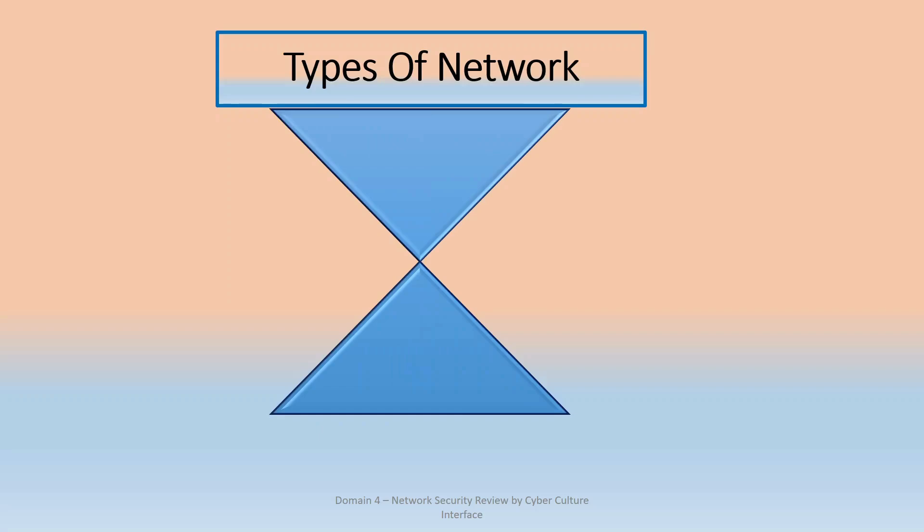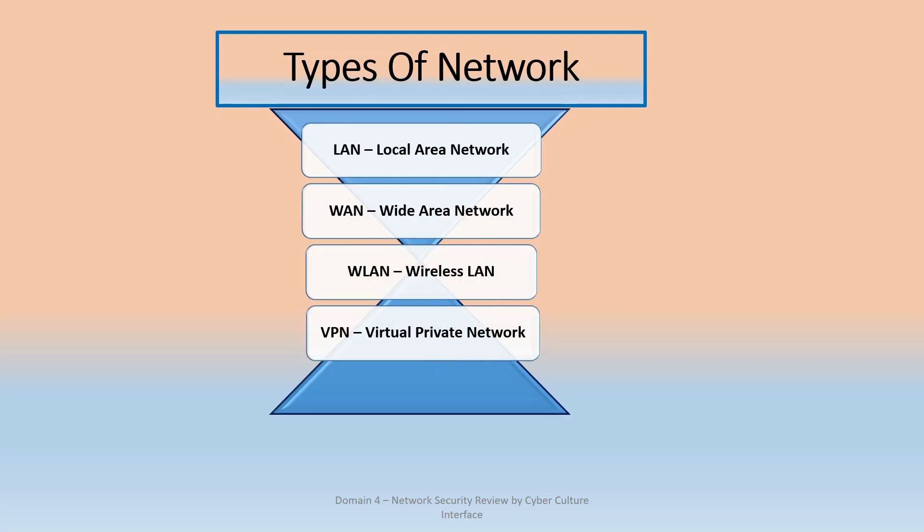We have different types of networks. This is one of the things that you need to understand in cybersecurity in Domain 4 network security. We have four major types: LAN which is local area network, the wide area network (WAN), the WLAN which is wireless local area network, and the VPN, the virtual private network. These are the most common ones that you'll be getting reference to often.